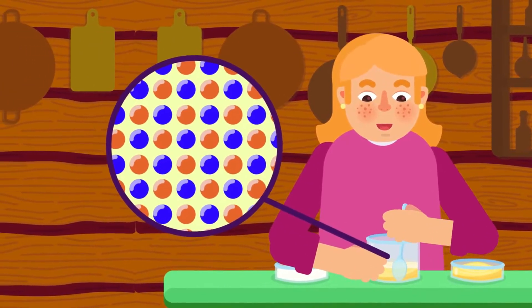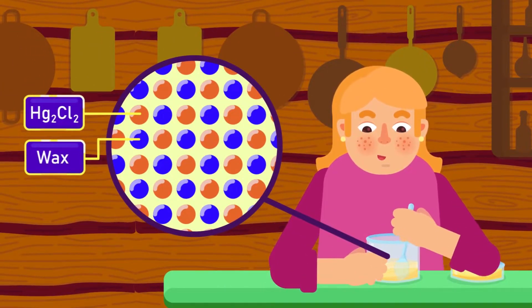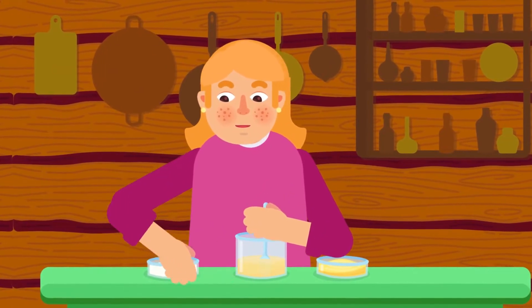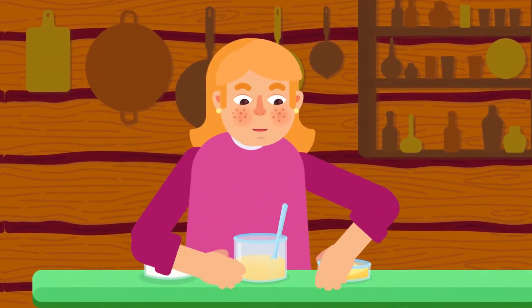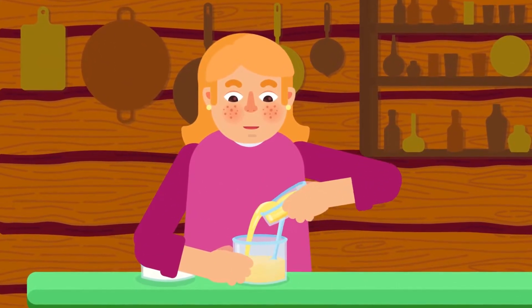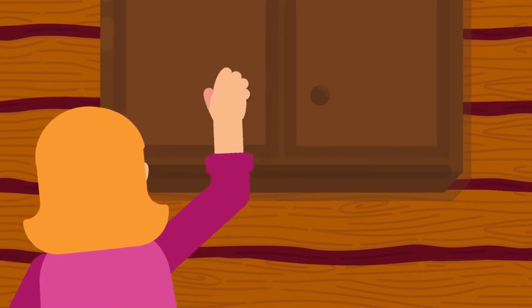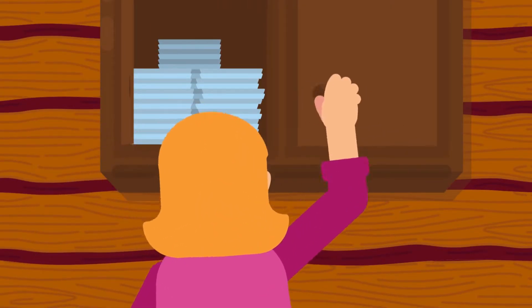Each pure substance retains its individual chemical properties. The components of a mixture are not fixed — they can be present in any ratio. The mixture can be classified as either homogeneous or heterogeneous.